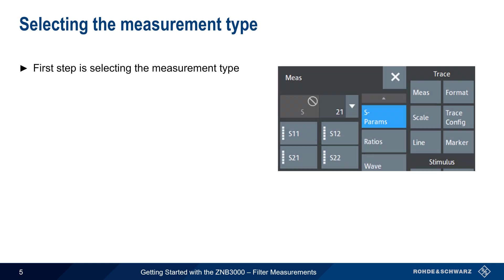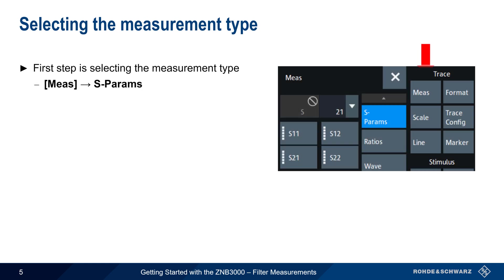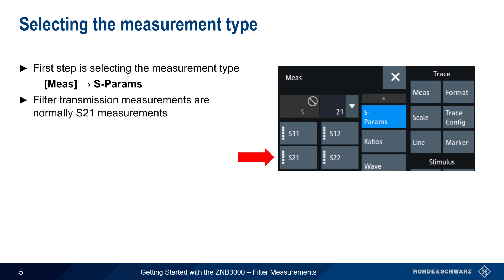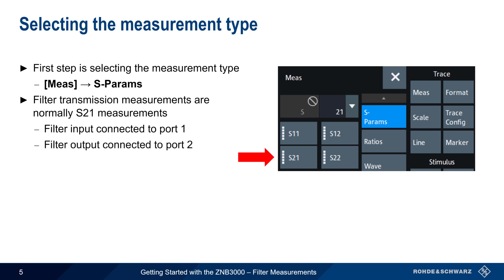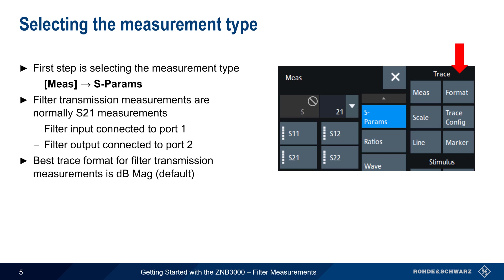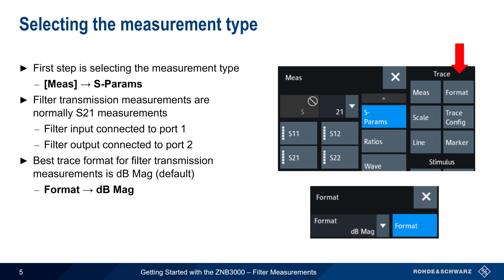To select the measurement type on the ZMB3000, we first select Measure and then choose S-Parameters. Filter transmission measurements are normally S21 measurements, meaning that the filter input is connected to port 1 on the ZMB, and the filter output is connected to port 2. Filter transmission measurements are mostly concerned with attenuation as a function of frequency, so the best trace format for this measurement is dB magnitude. This is the default trace format, but it can also be chosen by selecting Format > dB Mag.